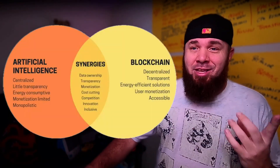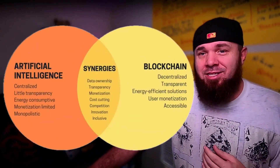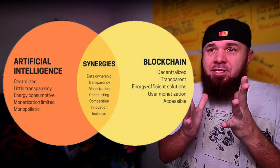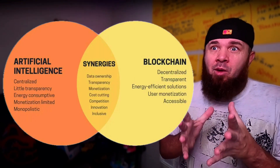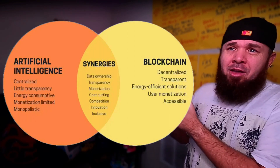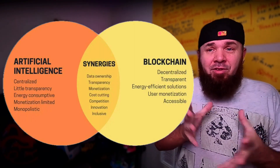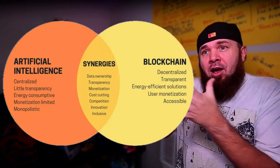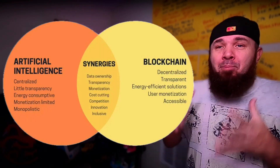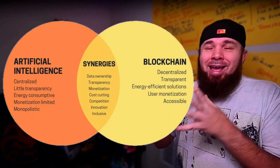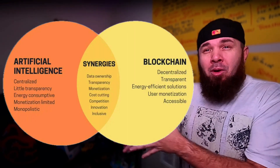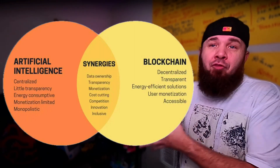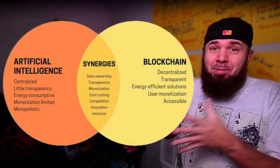That sounds overwhelming, I know — there are too many moving parts. But I think this graph is actually beautiful. Vitalik tweeted it out, and I think it's such an important component to understanding where we're going. There's artificial intelligence — many of us understand where that's at — and then there's blockchain: decentralized, transparent, energy efficient, user monetization, accessibility. The bigger piece is the synergies and the overlap. Why is decentralized AI so important? Why do we need this? We need it because we can't fall for the same things that happened in Web 2.